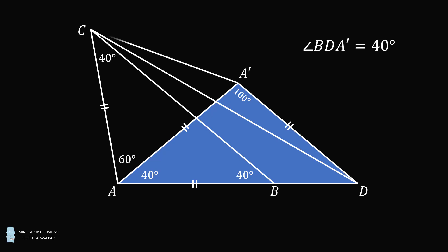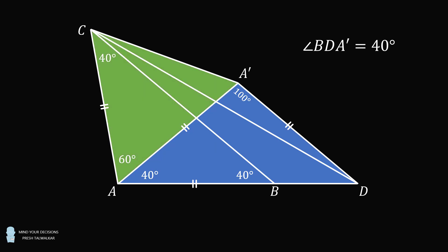From here, construct A'C. Now, triangle ACA' is an isosceles triangle with a vertex angle equal to 60 degrees. So ACA' is an equilateral triangle. All three of its angles will be equal to 60 degrees, and all three sides will be equal to each other.